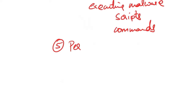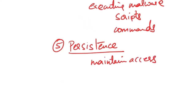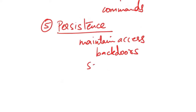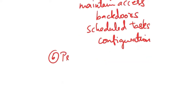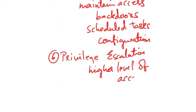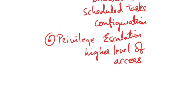Next is persistence. Persistence techniques enable adversaries to maintain access to a compromised system over an extended period. This involves establishing backdoors, creating scheduled tasks or modifying system configuration to ensure continued access even after a reboot. Next is privilege escalation — obtaining higher levels of access by exploiting vulnerabilities, abusing misconfigurations or stealing credentials to elevate privileges and access sensitive information.